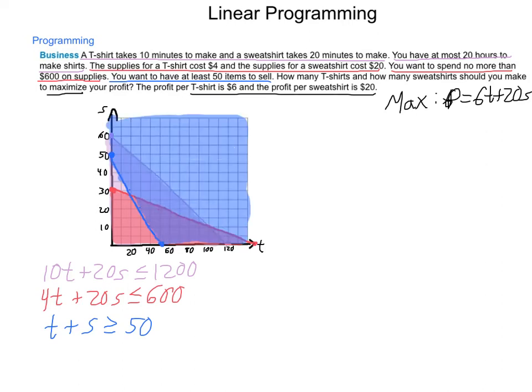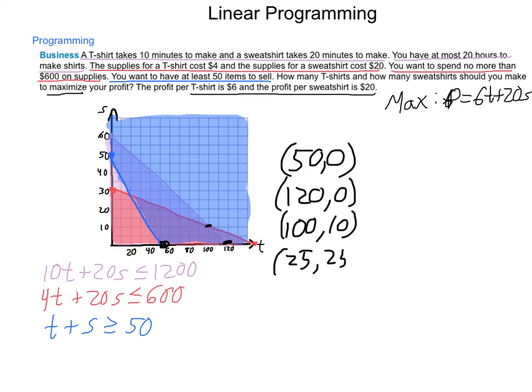Once we have our feasible region constructed, our next duty is to go through and find our points of intersection. As we look at this, points of intersection on this graph are going to be the following. First, we will have a point out at 50, 0. Next, we will have a point at 120, 0. Third, we will have a point at 100, 10. And last, we will have a point at 25, 25, if our graph is accurate. So these four locations make up the vertices.